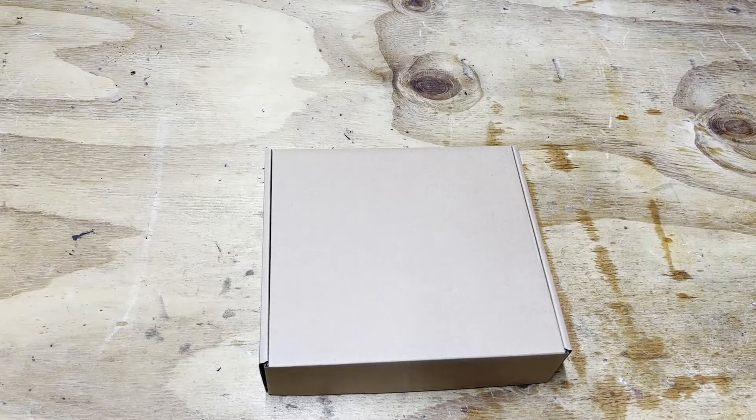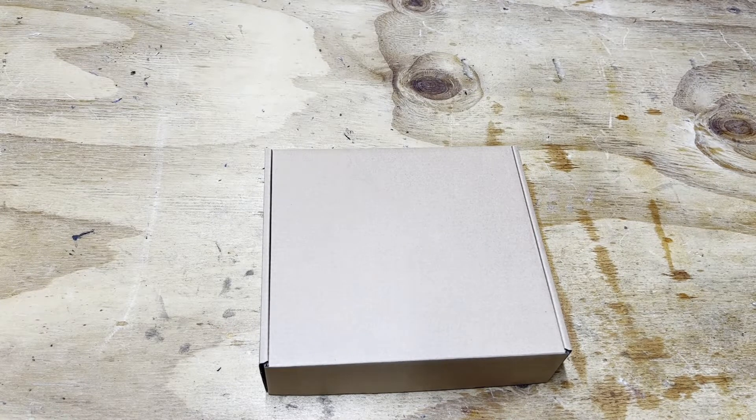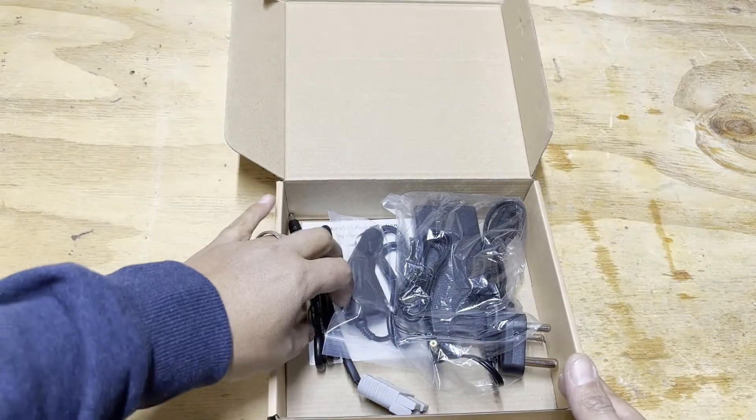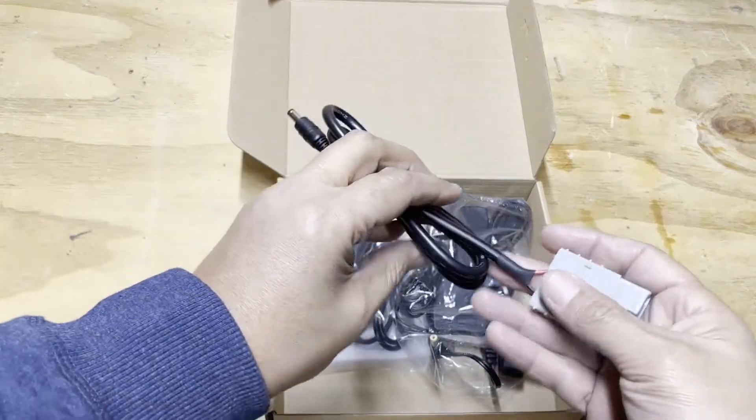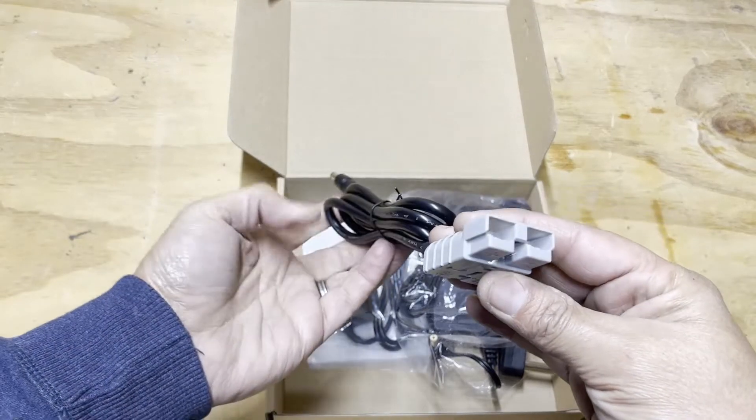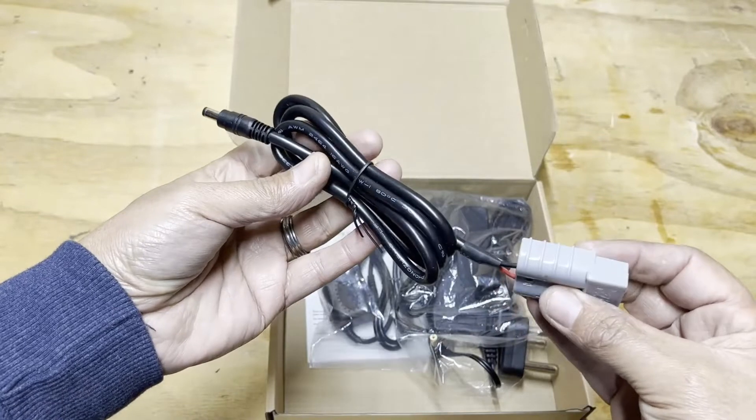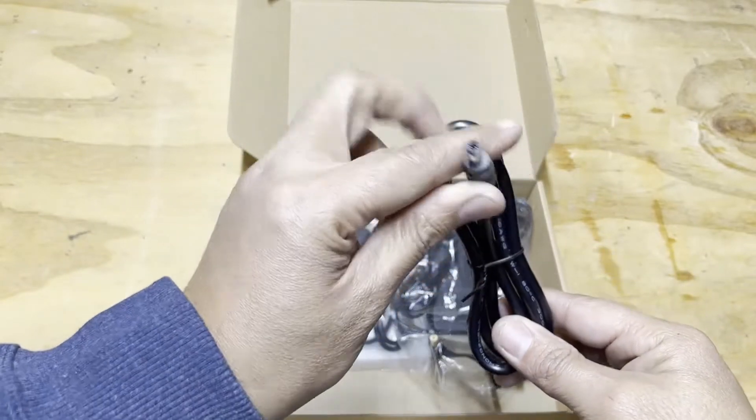The accessories that come with the unit, let's just open it up here. We've got a solar connector with an Anderson plug, SB50 gray. This can connect to a solar panel and this plugs into the unit.